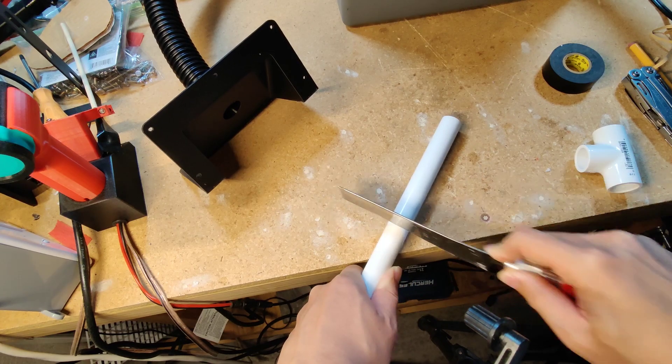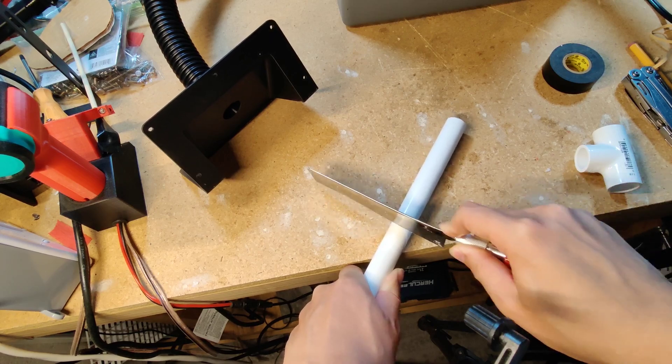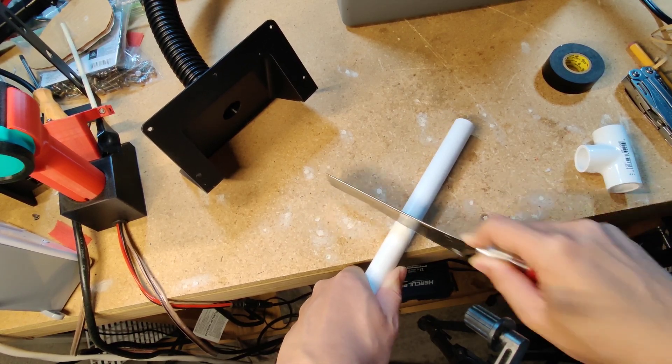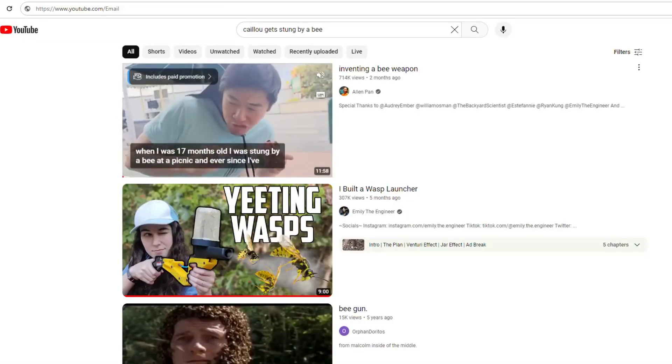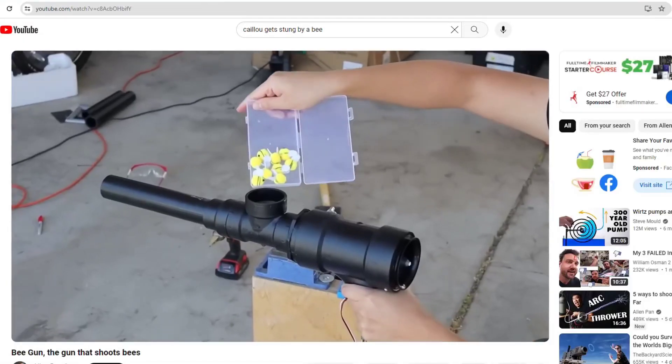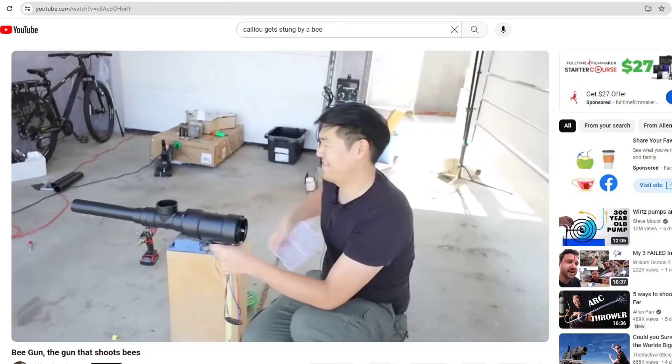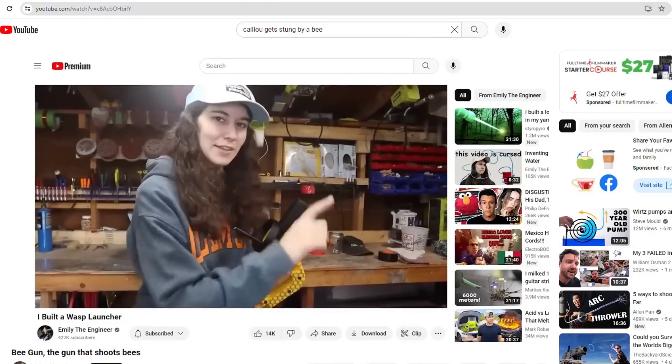Next, we'll build the gun portion. Now yes, we know what you're thinking, this isn't necessarily an original idea. Both Emily the Engineer and Alan Pan have tried something similar. Although in both videos, they tried using the Venturi effect to suck and shoot the bees with no success.